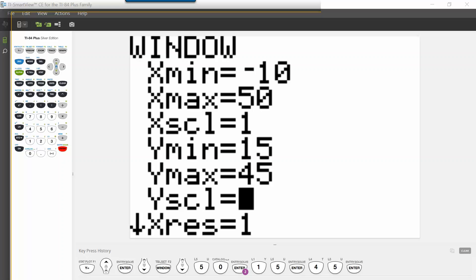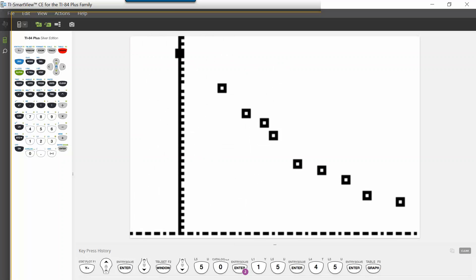Now when we hit graph, we should see our points, and we get something that looks like this. Now we can find our linear regression.